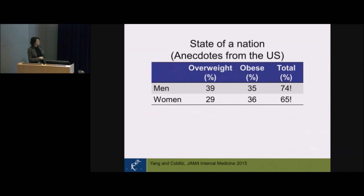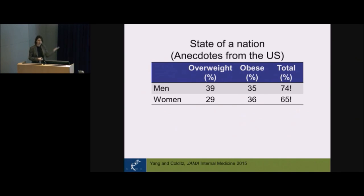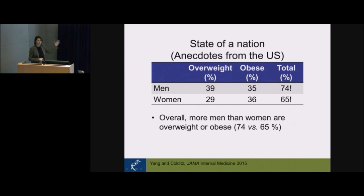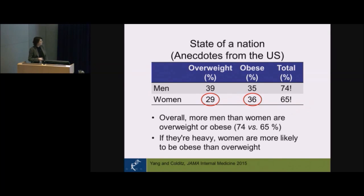The US released some data and it's quite scary. 74 percent of men in the US are either overweight or obese, so only 26 percent of the population are normal weight. You've heard about the association of obesity with metabolic disease, so this carries a lot of risk. The situation in women is not far behind, however if women are heavy they're more likely to be obese than overweight, which is also interesting.